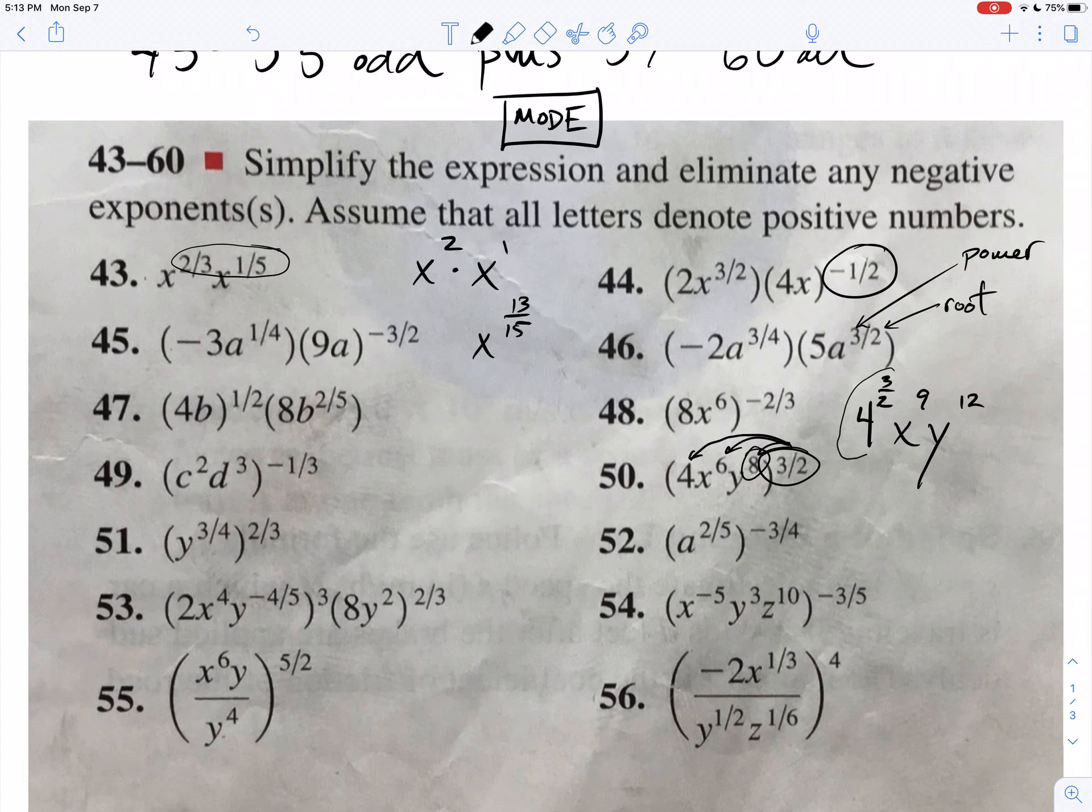But, here's what I wanted to get at. Any of the problems that end up with one of these dudes in it, 4 to the power of 3 halves, is 8. You're not going to get any weird, wacky, crazy numbers. It's going to be a whole number if you do it right. So, what is the, just in case you, let's interpret this. That means square root of 4, that's 2. What do you do with that answer? You cube it, so that's why I'm saying 8. So, the answer here would just be 8x to the 9th, y to the 12th.